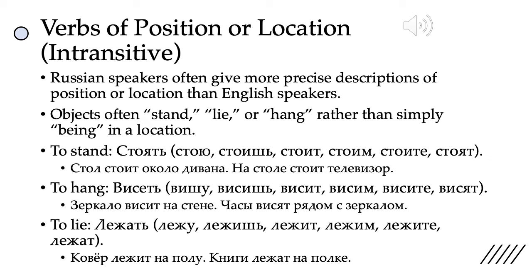You already know стоять. It's one of the O-stem second conjugation verbs. The conjugation is стою, стоишь, стоит, стоим, стоите, стоят. Notice that it is unstressed. We could use it in sentences such as: стол стоит около дивана — the table stands, or the table is near the couch. На столе стоит телевизор — a television is, or a television stands, on the table.